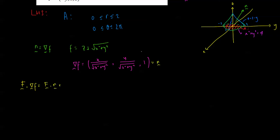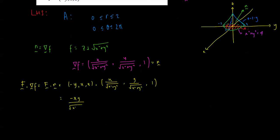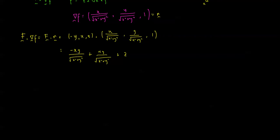Now we find F dotted with n. F equals (−y, x, z) and n equals (x/√(x²+y²), y/√(x²+y²), 1). The dot product gives: (−xy)/√(x²+y²) + xy/√(x²+y²) + z. Fortunately, the first two terms cancel — one is negative and one is positive of the same quantity — so F dotted with n simply equals z.